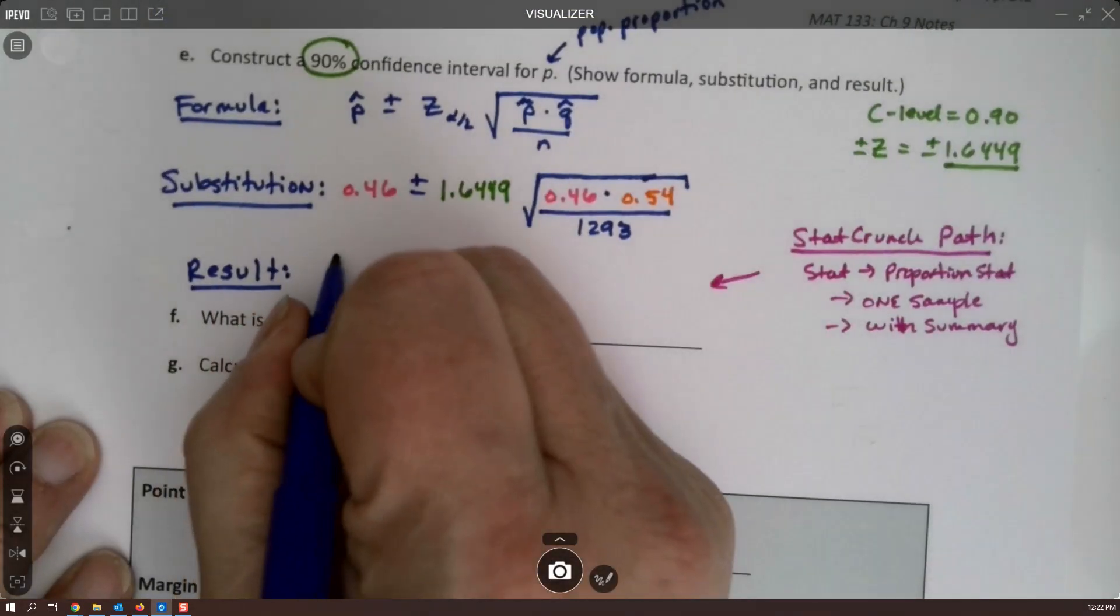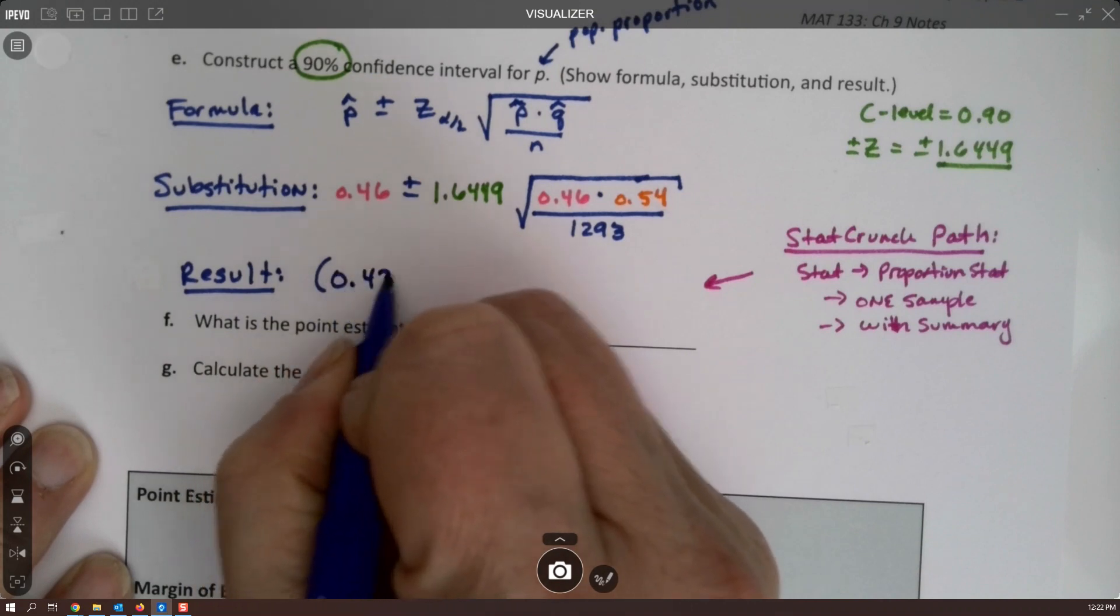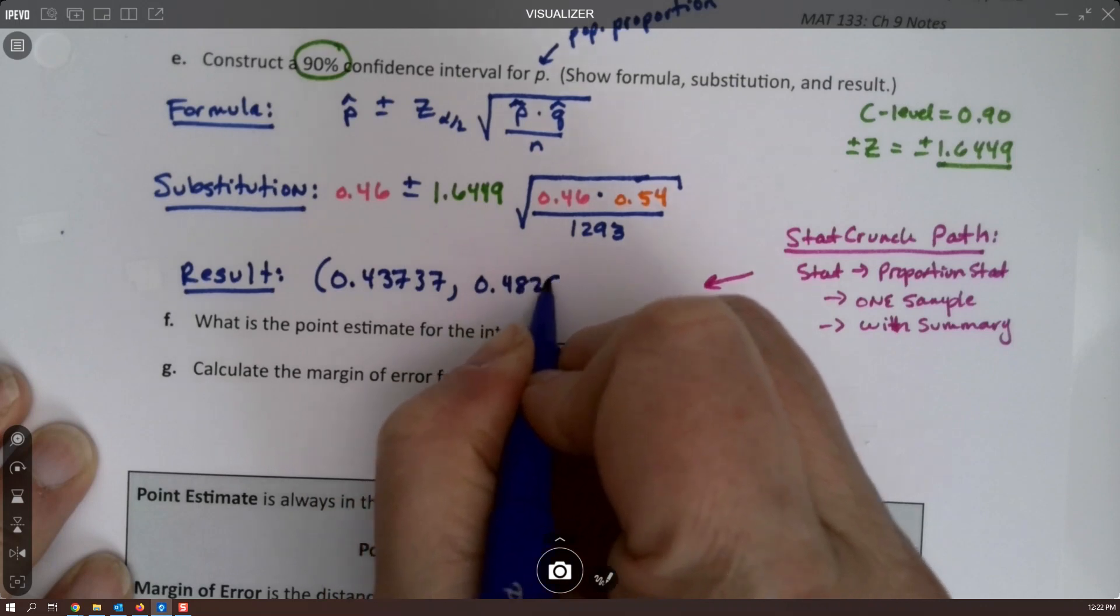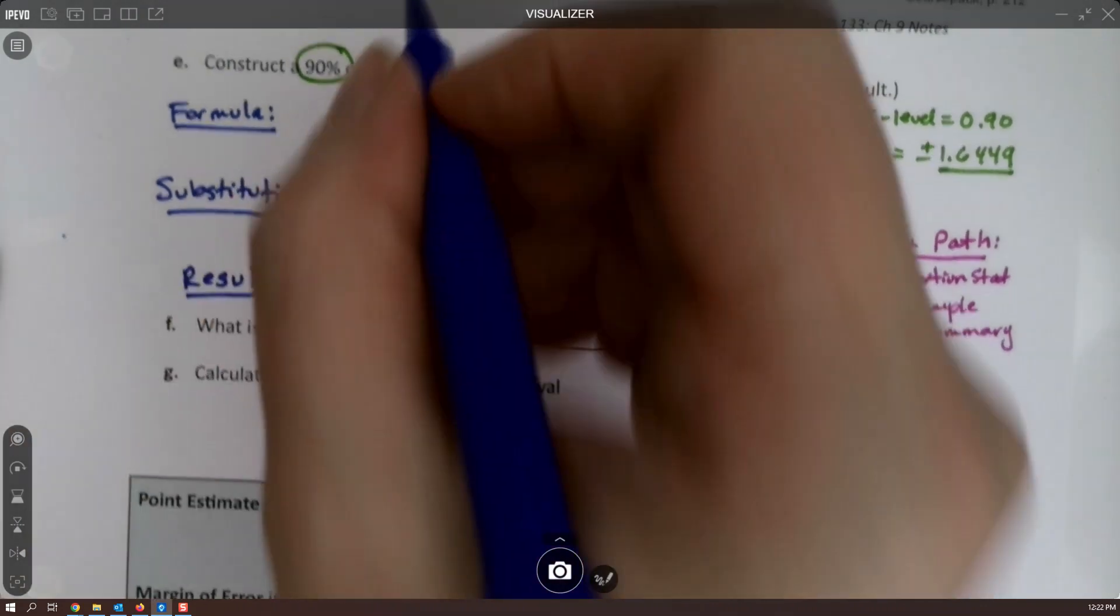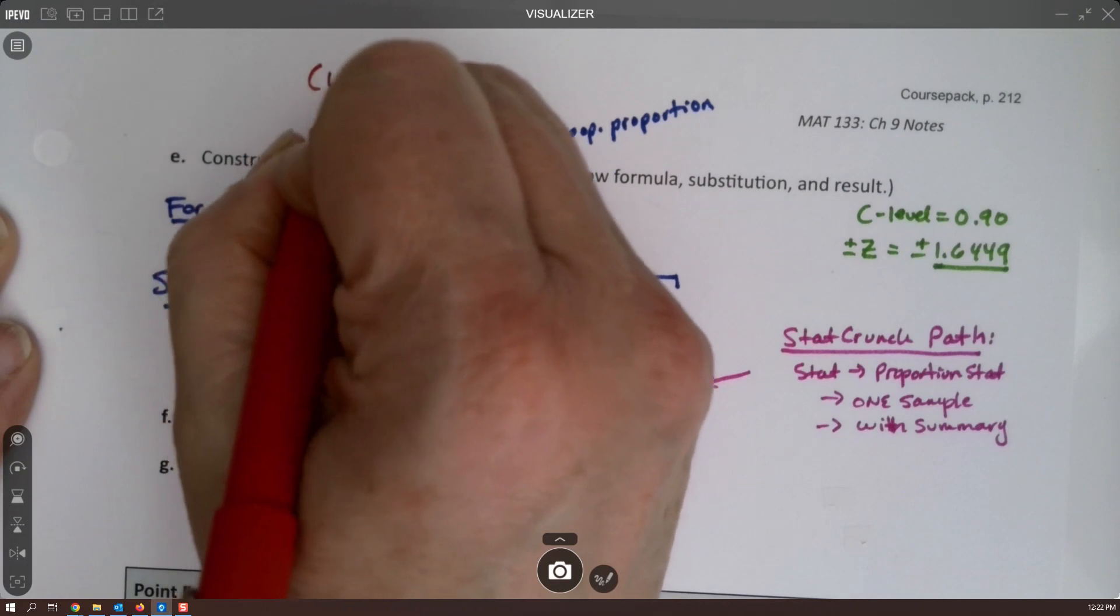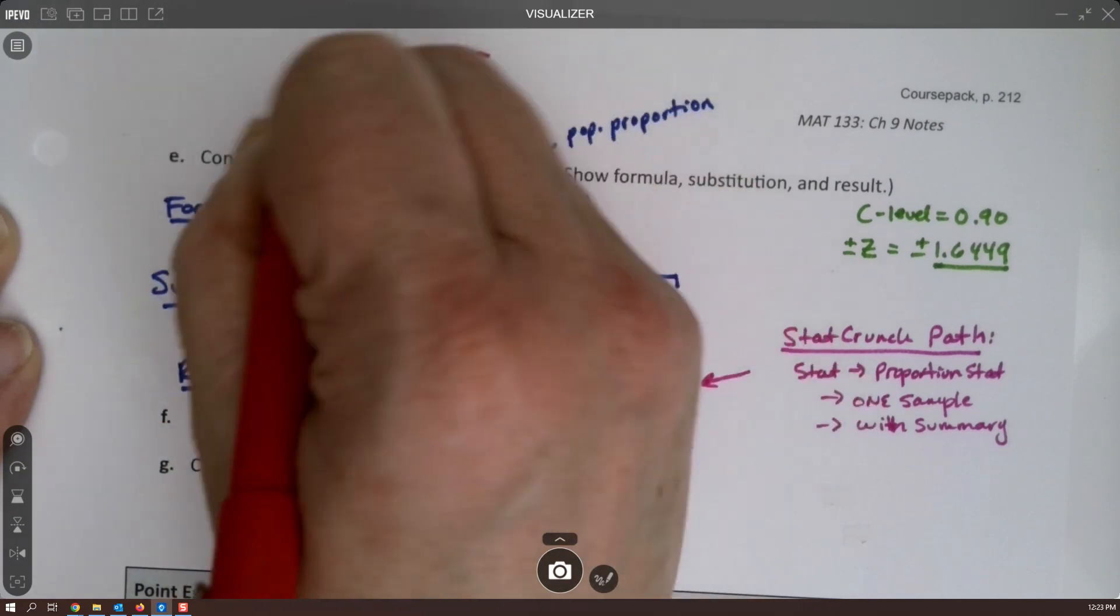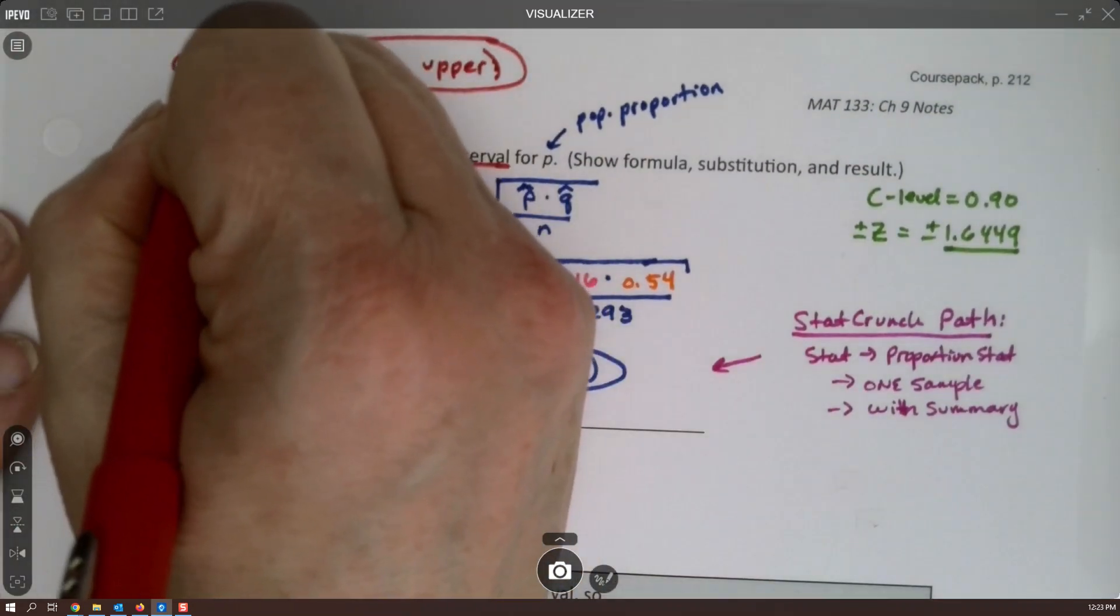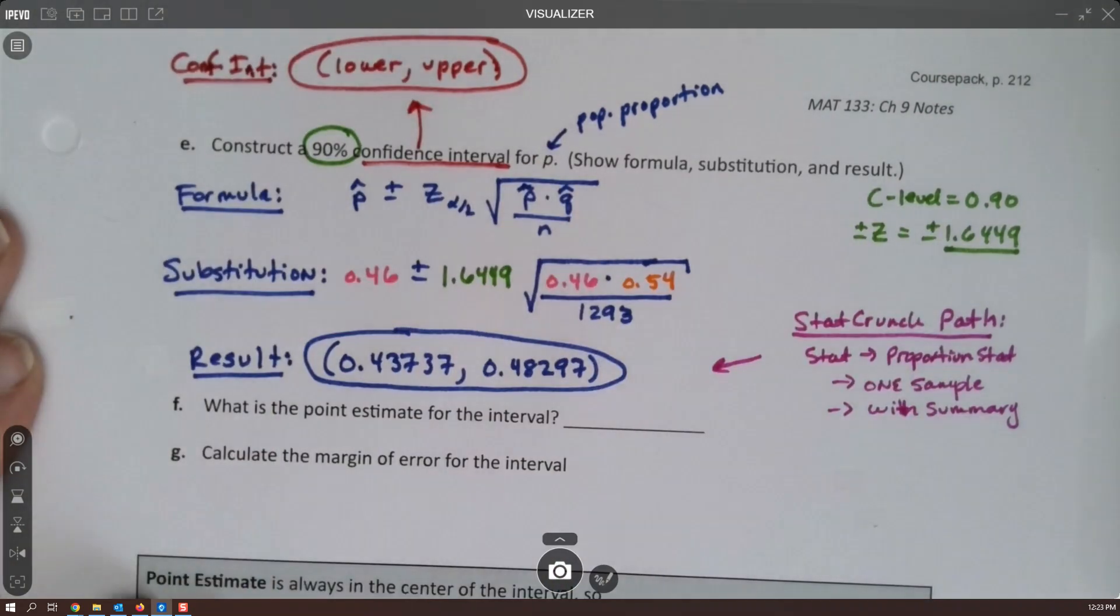So 0.437 and 0.48297, if we round it. Okay, so lower, it always goes parentheses, lower, comma, upper. So 0.43737, comma, 0.48297. That is your confidence interval. Confidence interval is, as a matter of fact I'm just going to make a note. Confidence interval is lower comma upper. That's our confidence interval, that's the standard way of writing it. Not the confidence level, right? Confidence level is 90%. The confidence interval is lower and upper.